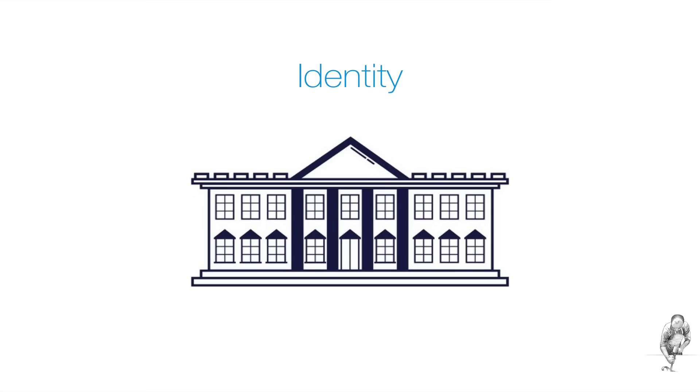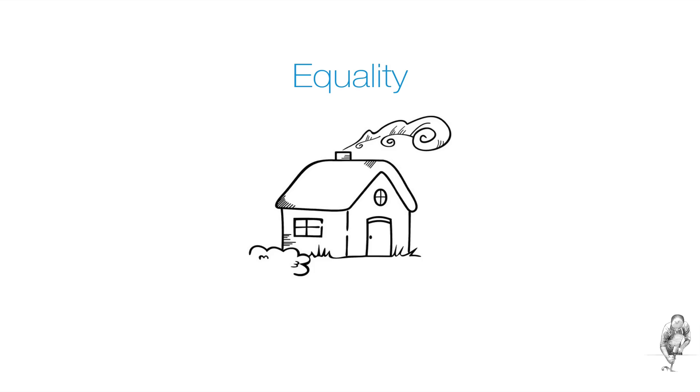So object identity will tell us if two reference variables reference the same object in memory or the same unique house as in our example. However, in other cases, we just want to know: is this a white house or a blue house? In other words, do we consider this house equal to the other house we are searching for? This is what object equality means.